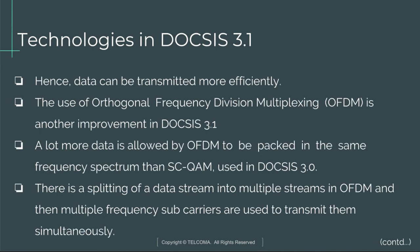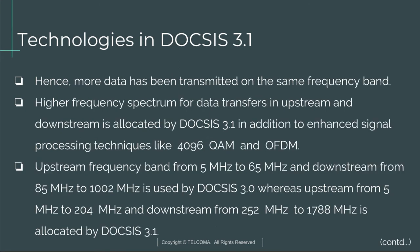Another improvement in DOCSIS 3.1 is the use of Orthogonal Frequency Division Multiplexing (OFDM). OFDM allows a lot more data to be packaged in the same frequency spectrum compared to SC-QAM used in DOCSIS 3.0. A data stream is split into multiple streams, then transmitted simultaneously using multiple frequency sub-carriers. DOCSIS 3.1 allocates higher frequency spectrum for upstream and downstream transfers, enhanced by signal processing techniques like 4096 QAM and OFDM.